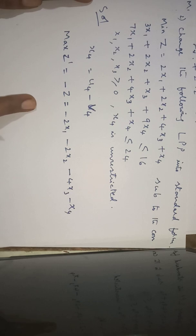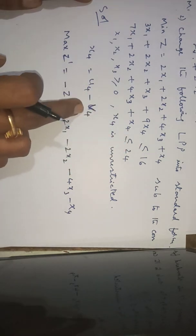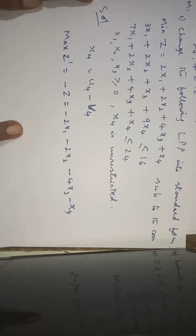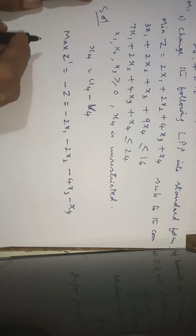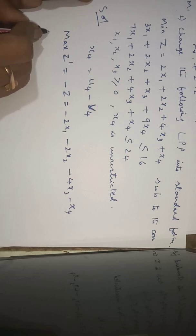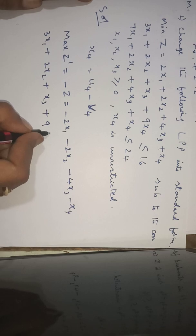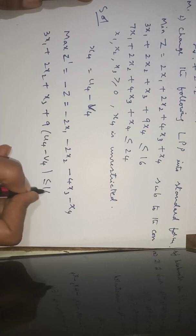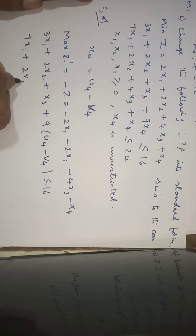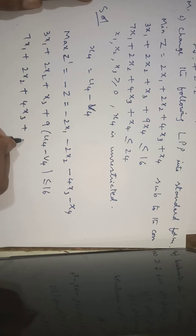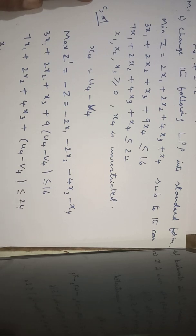In the constraints, wherever x4 appears we substitute u4 minus v4, since x4 is unrestricted and must be converted to non-negative variables. The first constraint becomes: 3x1 plus 2x2 plus x3 plus 9(u4 minus v4) less than or equal to 16. The second constraint becomes: 7x1 plus 2x2 plus 4x3 plus (u4 minus v4) less than or equal to 24. All of x1, x2, x3, u4, v4 are greater than or equal to 0.